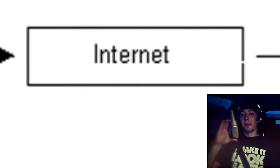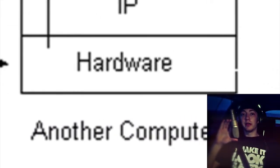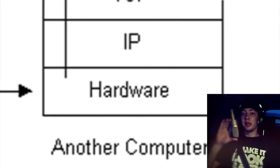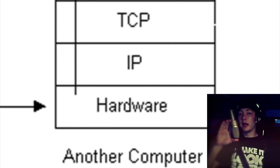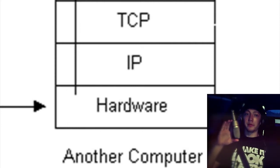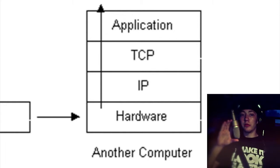Seven: eventually, the packets reach the destination computer, where they start at the bottom of the destination computer's TCP/IP stack and work upwards. Eight: as the packets go upward through the stack, all routing data that was added — such as IP address and port number — is stripped from the packets. Nine: when the data reaches the top of the stack, the packets have been reassembled into their original form.